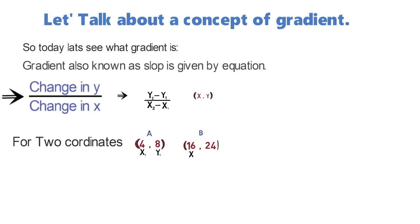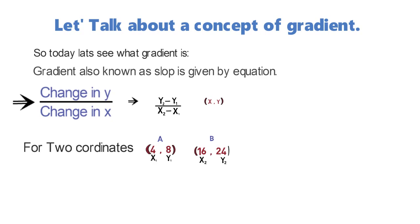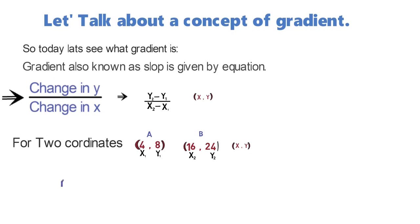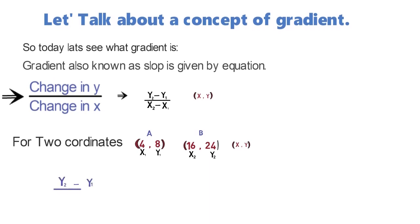Note that coordinates are always in the form of x, y. Let's put it in the equation. The equation is y2 minus y1 over x2 minus x1, therefore 24 minus 8 over 16 minus 4, which will be simplified to 4 over 3.